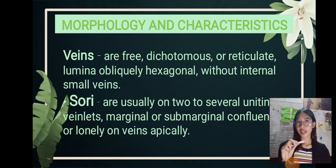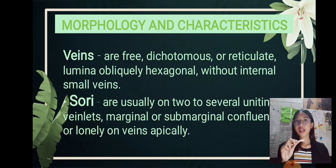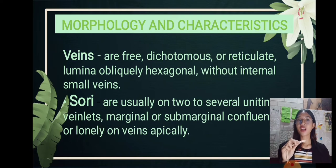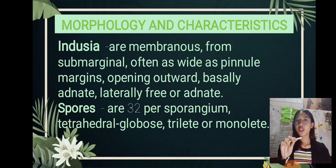Veins are free, dichotomous, or reticulate. Lumina obliquely hexagonal without internal small veins. The sori are usually on 2 to several uniting veinlets, marginal or sub-marginal confluent, or lonely on veins apically. Indusia are membranous, sub-marginal, often as wide as pinna margins, opening outward, basally adnate, and laterally free or adnate.